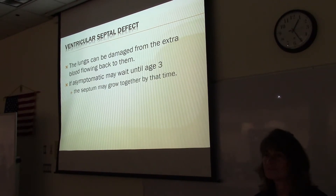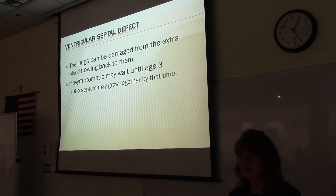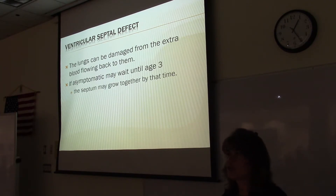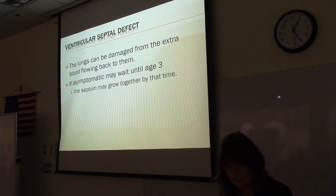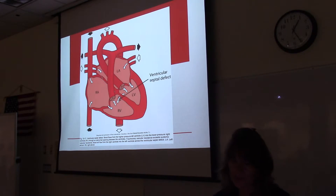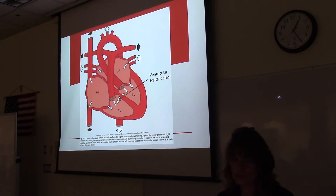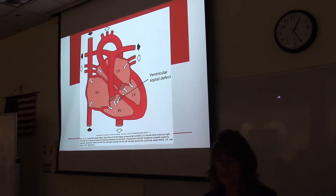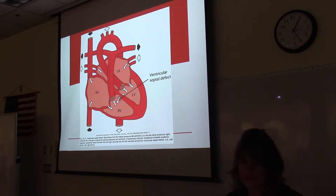If they're asymptomatic, nothing needs to be done — they'd likely catch it by listening to heart sounds. Blood flows from the left ventricle through the hole under high pressure and back into the right ventricle, resulting in an increased amount of blood flowing to the lungs in pulmonary circulation. Since the blood was already oxygenated and is recycling back to the right side, this is an acyanotic defect. However, the lungs can be damaged from the extra blood flow.